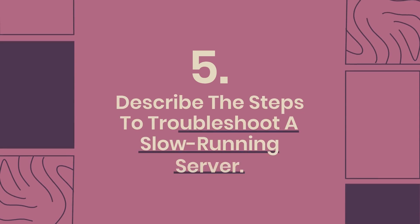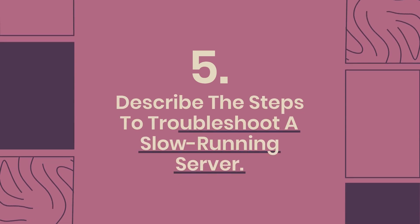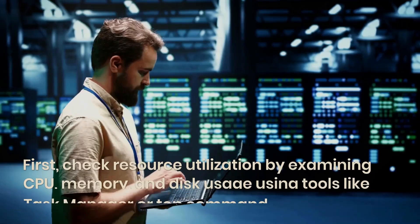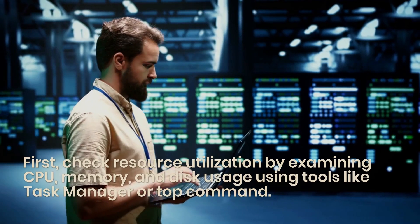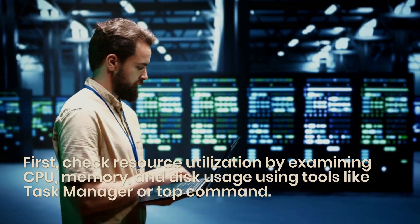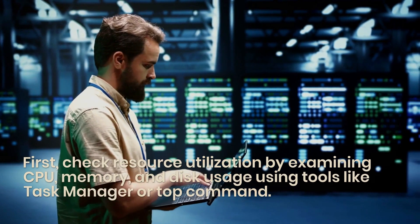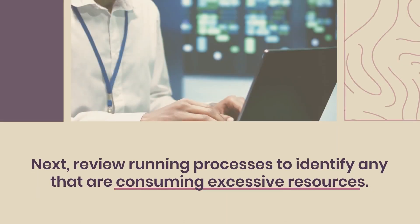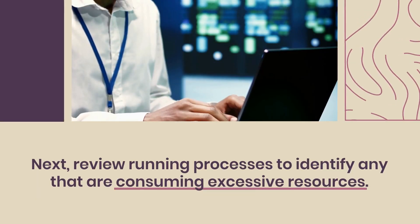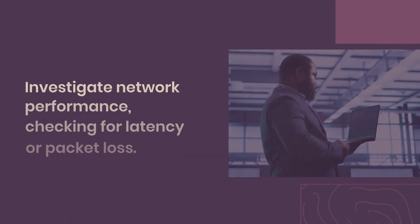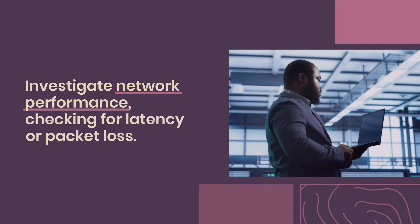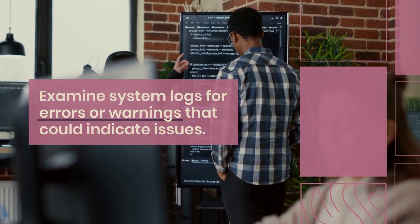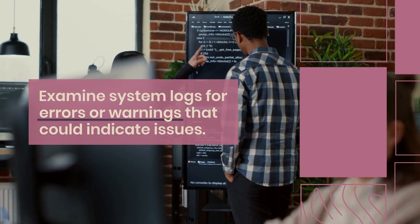Question 5: Describe the steps to troubleshoot a slow-running server. Troubleshooting a slow-running server involves several steps. First, check resource utilization by examining CPU, memory, and disk usage using tools like Task Manager or Top Command. Next, review running processes to identify any that are consuming excessive resources. Investigate network performance, checking for latency or packet loss. Examine system logs for errors or warnings that could indicate issues.